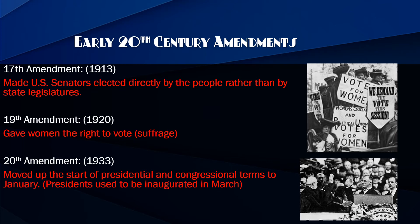It's only been 100 years since women could vote in national elections. The 20th Amendment moved up when the new presidential term starts — from March to late January. The 18th Amendment banned the making and selling of alcohol in the United States. That caused a lot of organized crime, making the mafia important in Chicago and other places. The 21st Amendment canceled the 18th, so that's kind of a dead end in amendments.